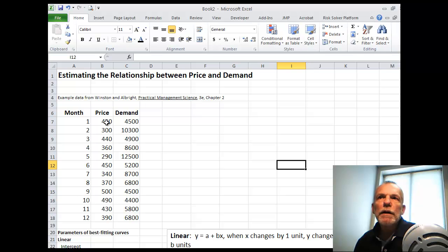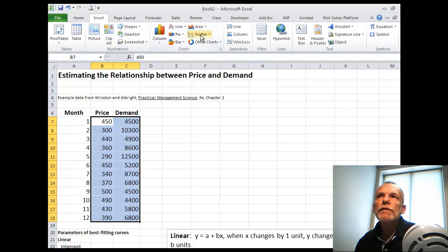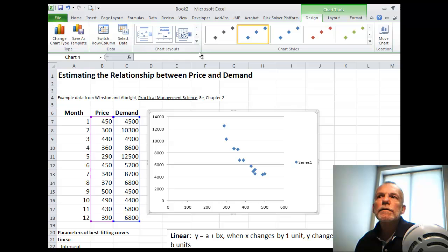So let's start by creating a scatter diagram. So we just highlight the data, insert, scatter. And so you can see the relationship of the data between the price on the horizontal and the demand on the vertical.